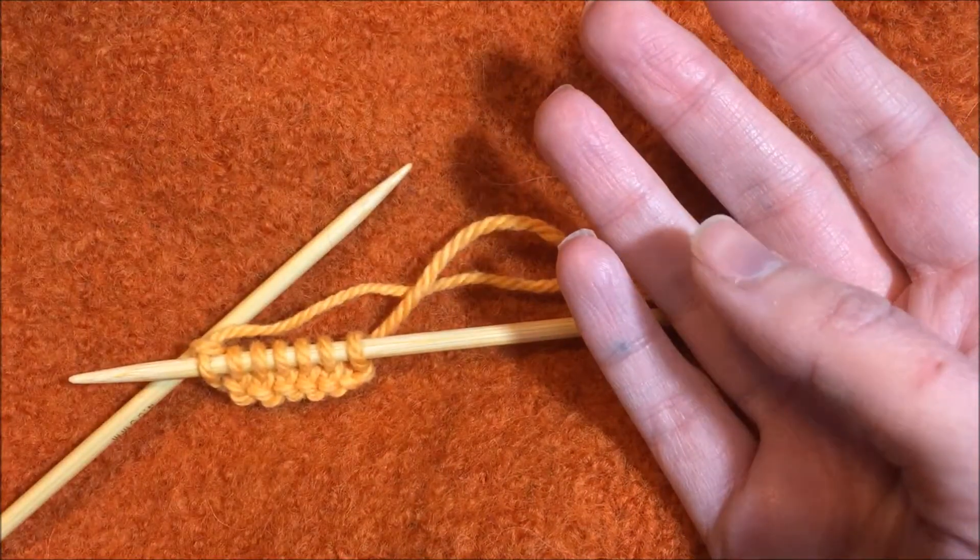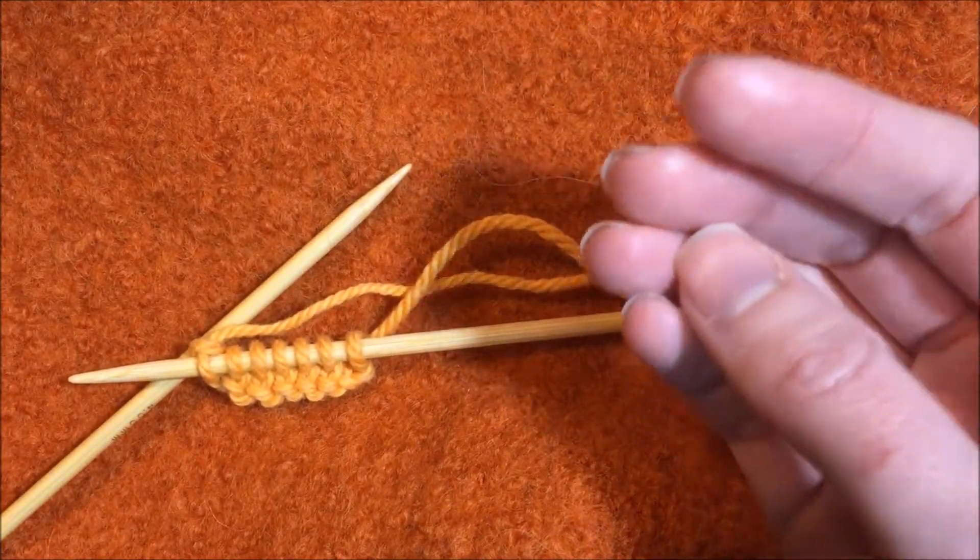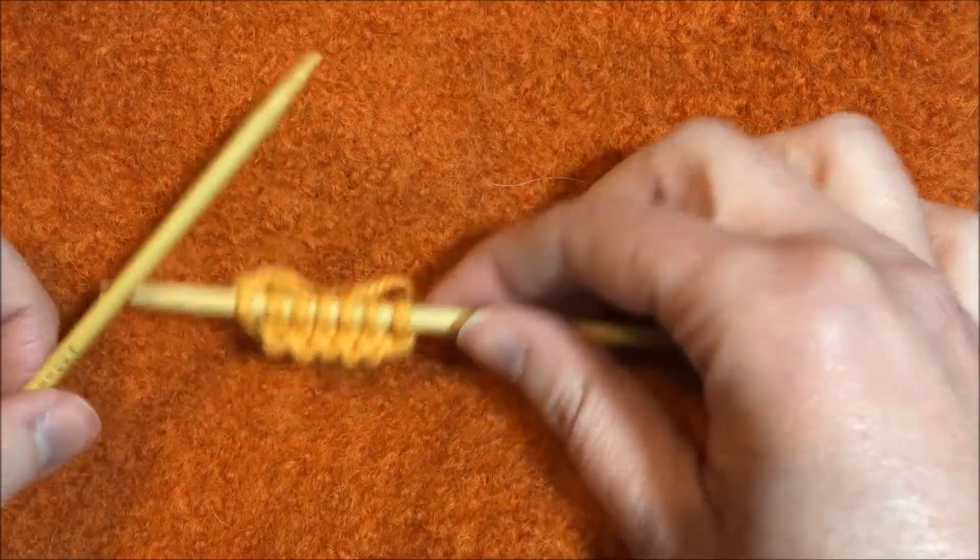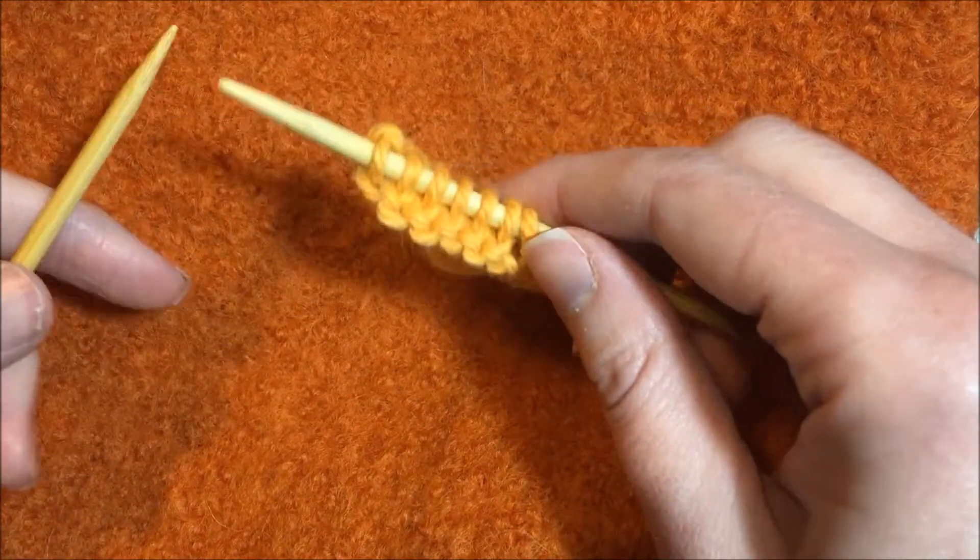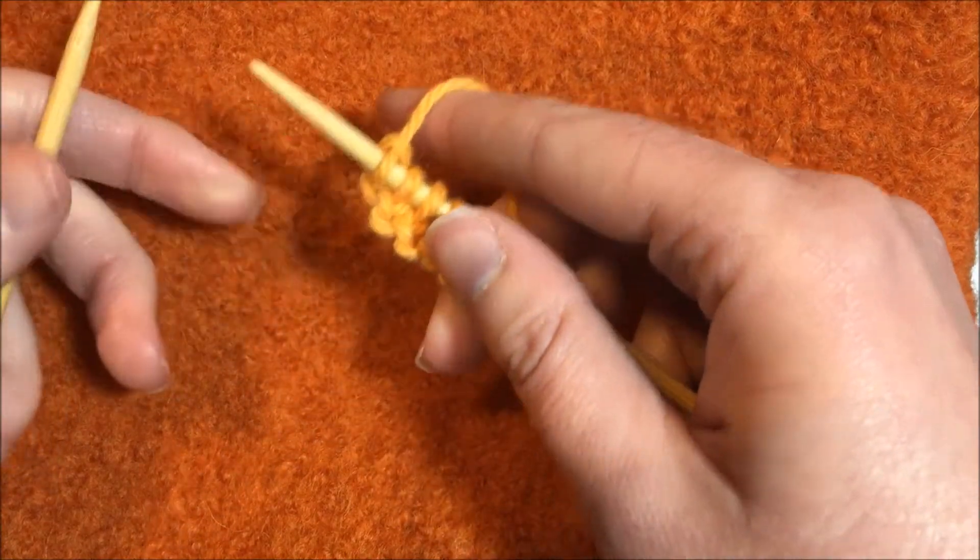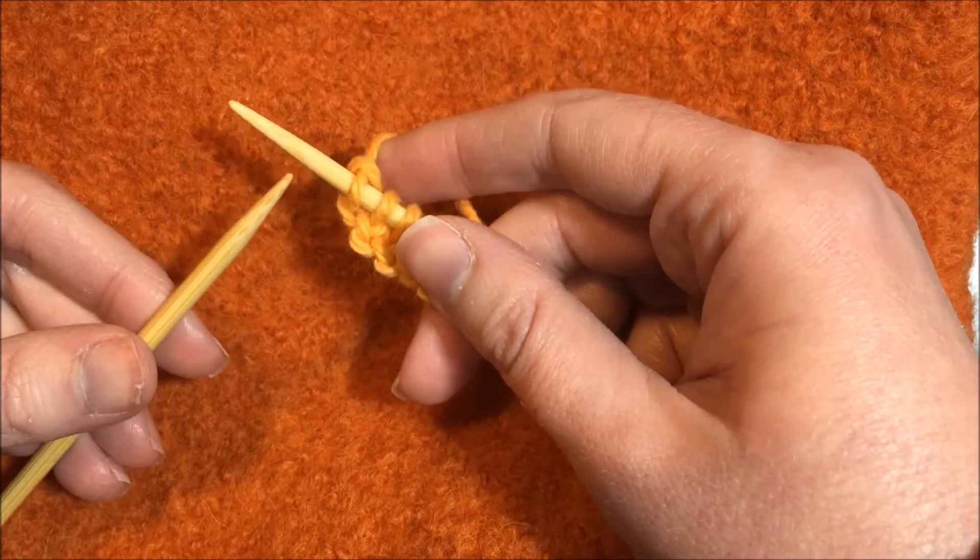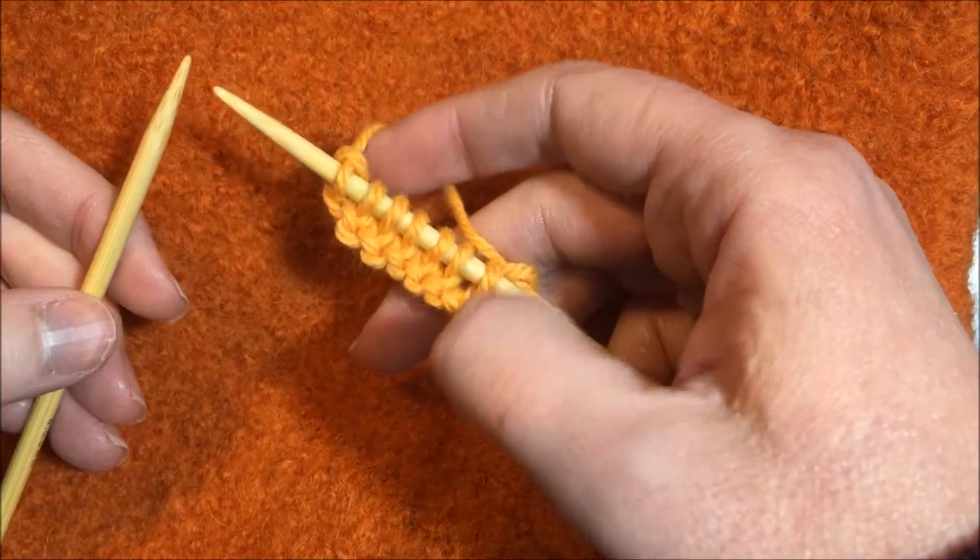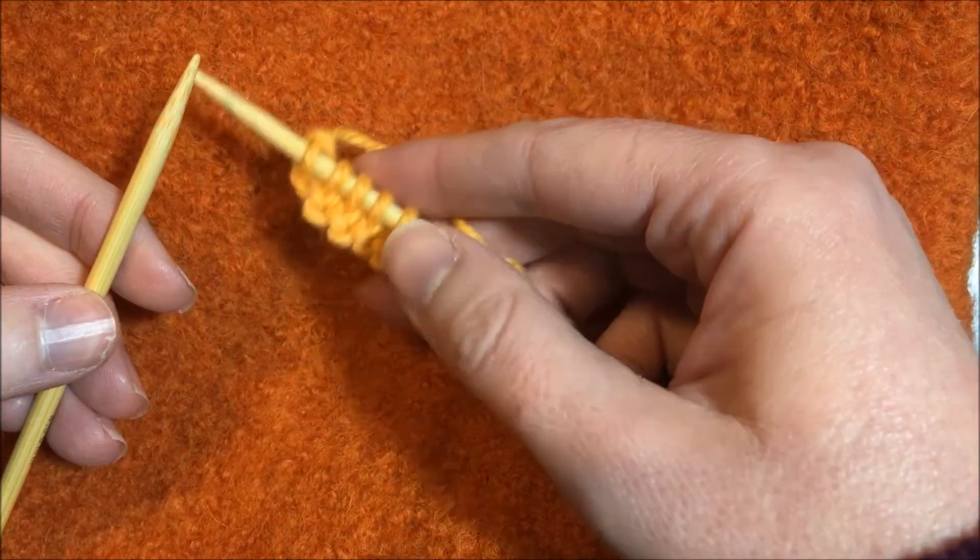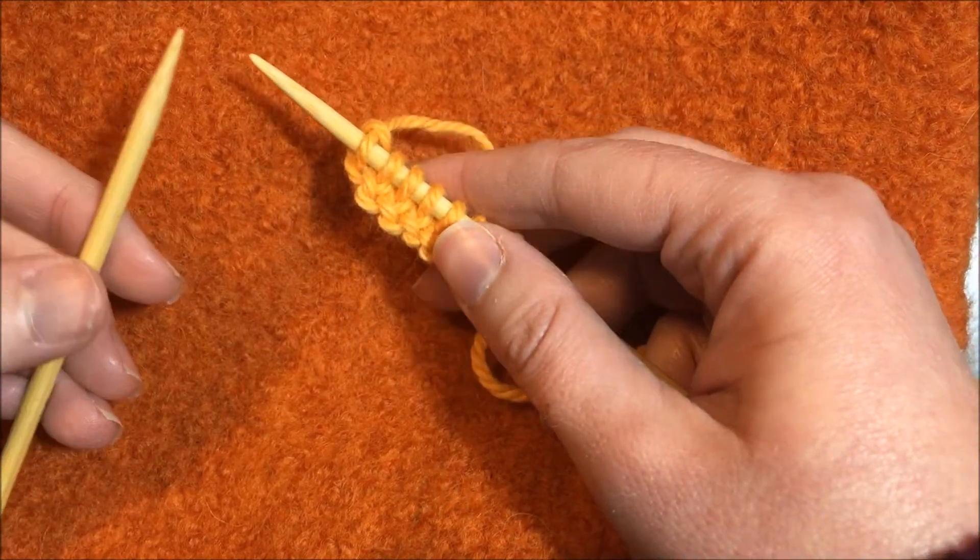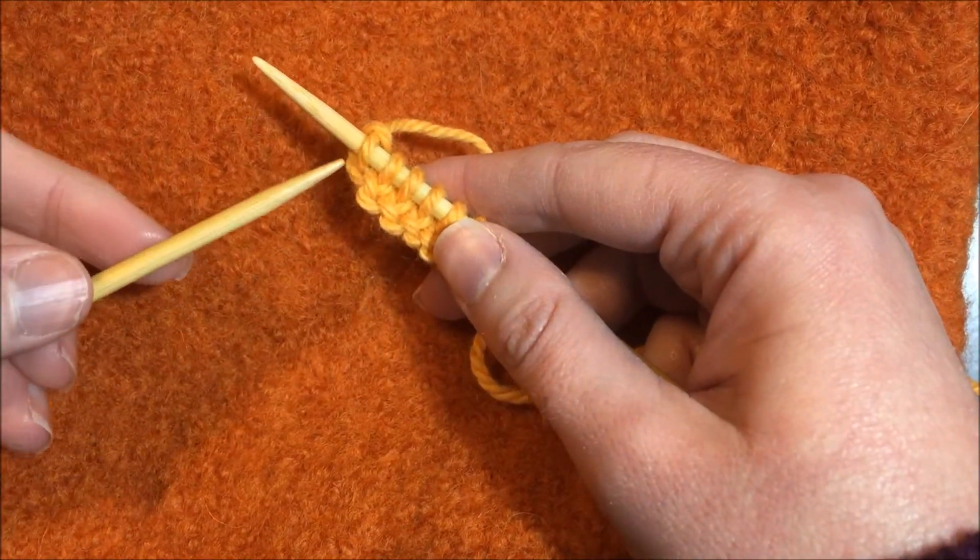And this is actually a pretty easy technique once you get the hang of it. So I have a little sample here where I've just knit the first row. And you hold your needles and your yarn the same way that you normally would. After you've knit across the first row, the needle with the stitches will be in your right hand and your empty needle will be in your left hand and you'll be working back across.